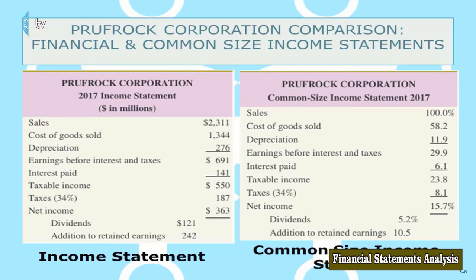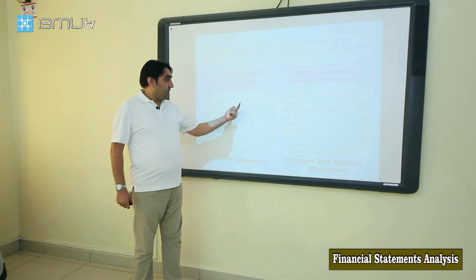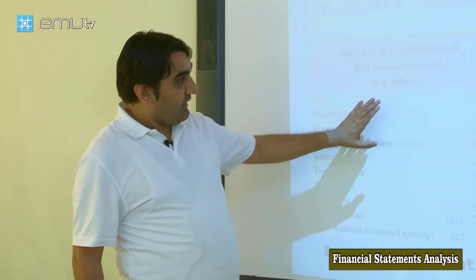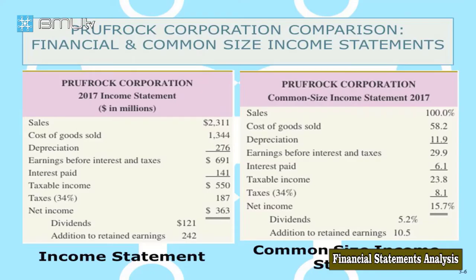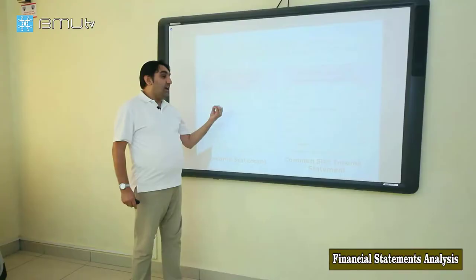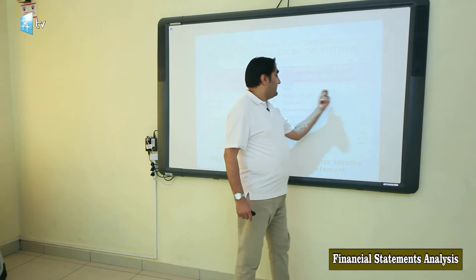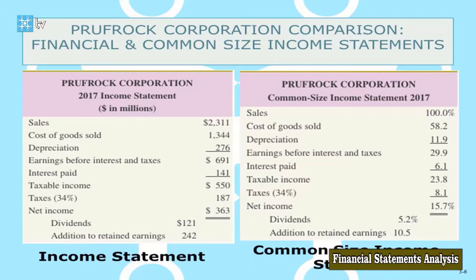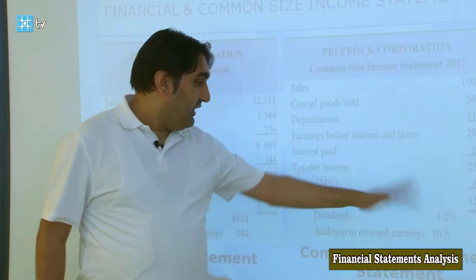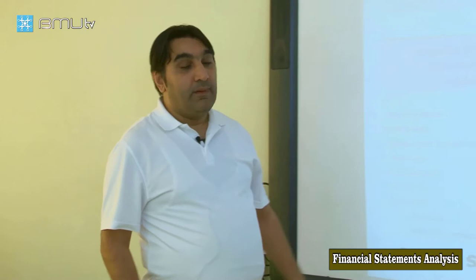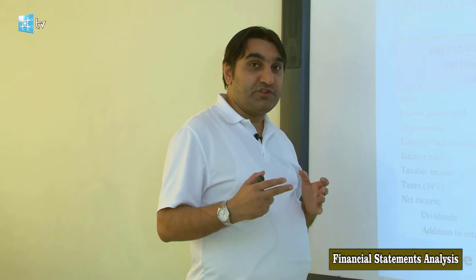For this company — Profit Corporation in 2017 — it has sales of $2.3 billion and costs of $1.3 billion. Since companies may have different sizes or report statements in different currencies, to compare them we convert all income statement items as a percentage of total sales. Sales is 100%, cost of goods sold is 58.2%, and after depreciation, interest and others, net income is 15.7% of total sales. Of that, 5.2% of sales is paid out as dividends and 10.5% is retained in the company for new projects. This is the common size financial statements approach, which gives us useful information for making decisions.